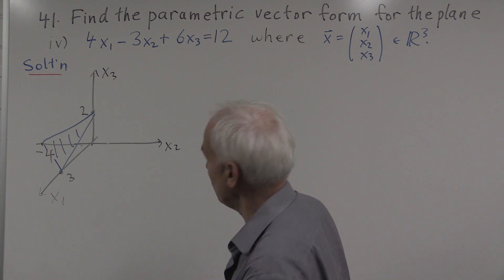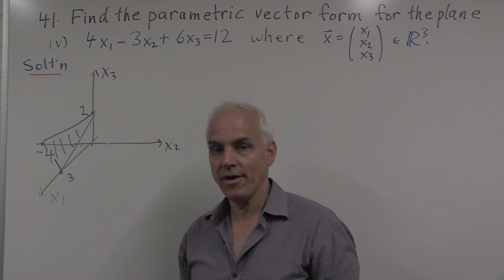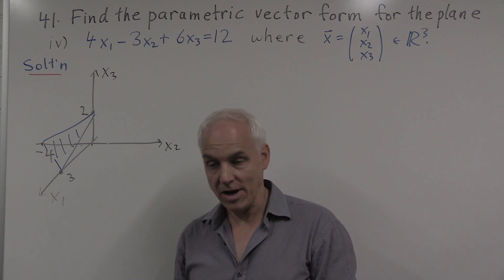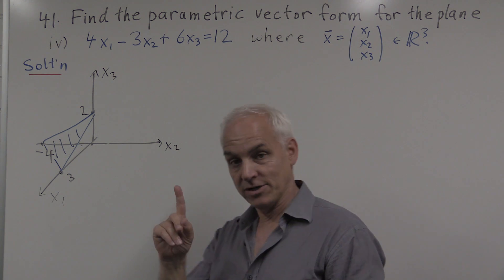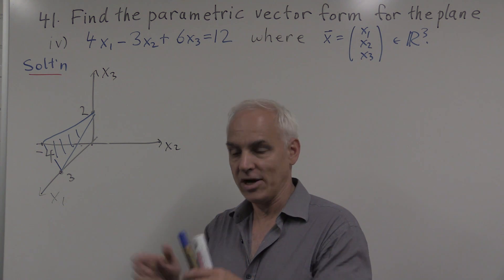So what do we have to do in order to find a parametric vector equation? We have to find, first of all, a point on the plane and two direction vectors.